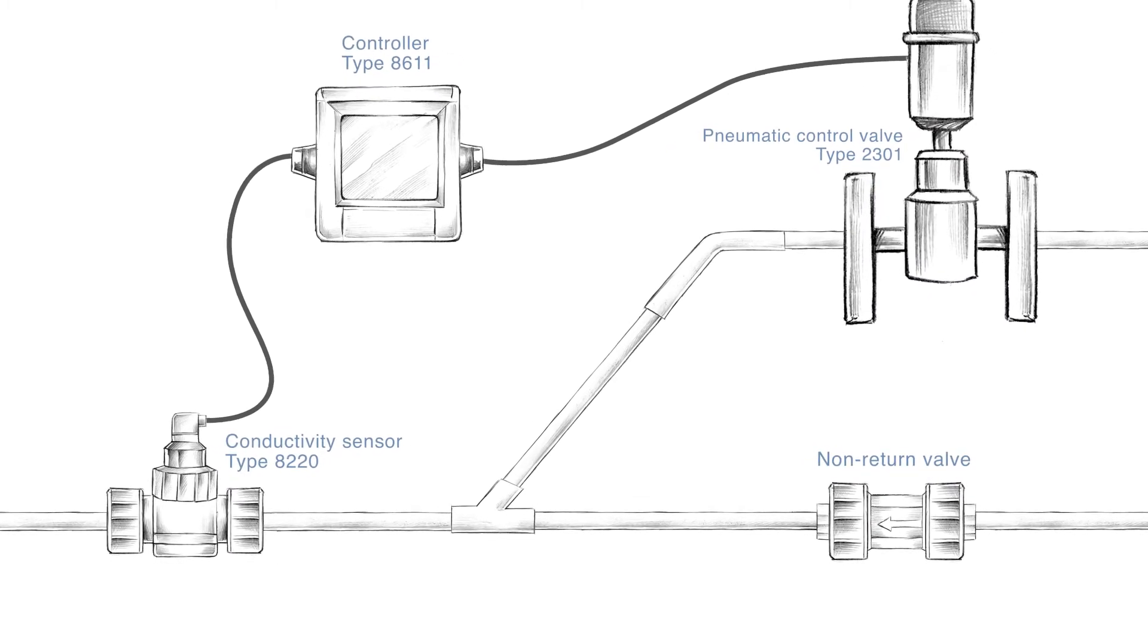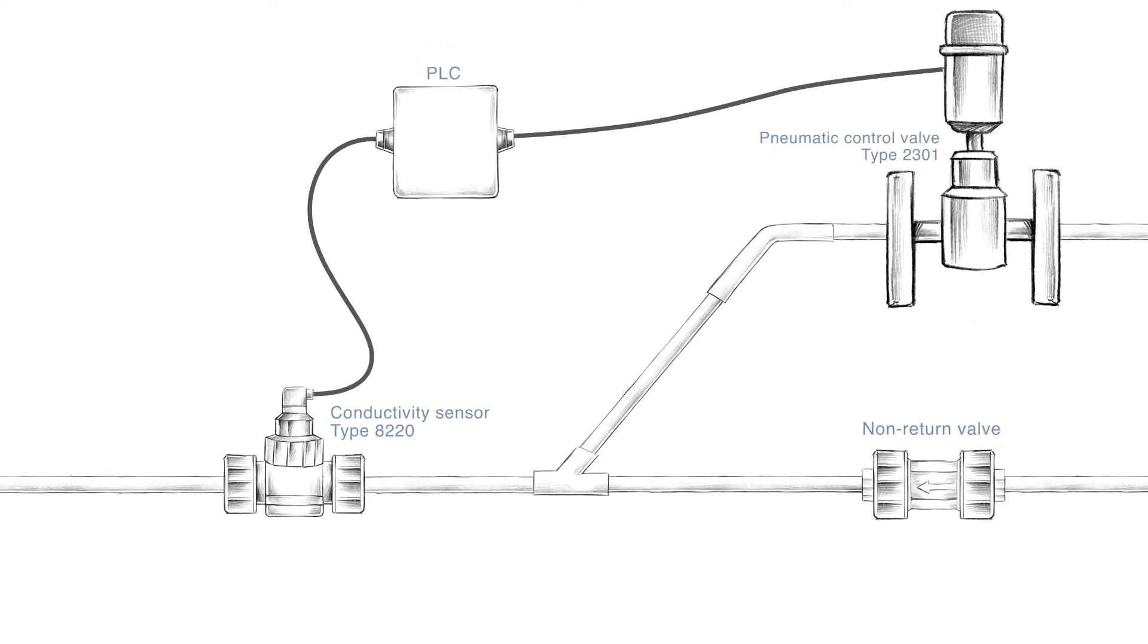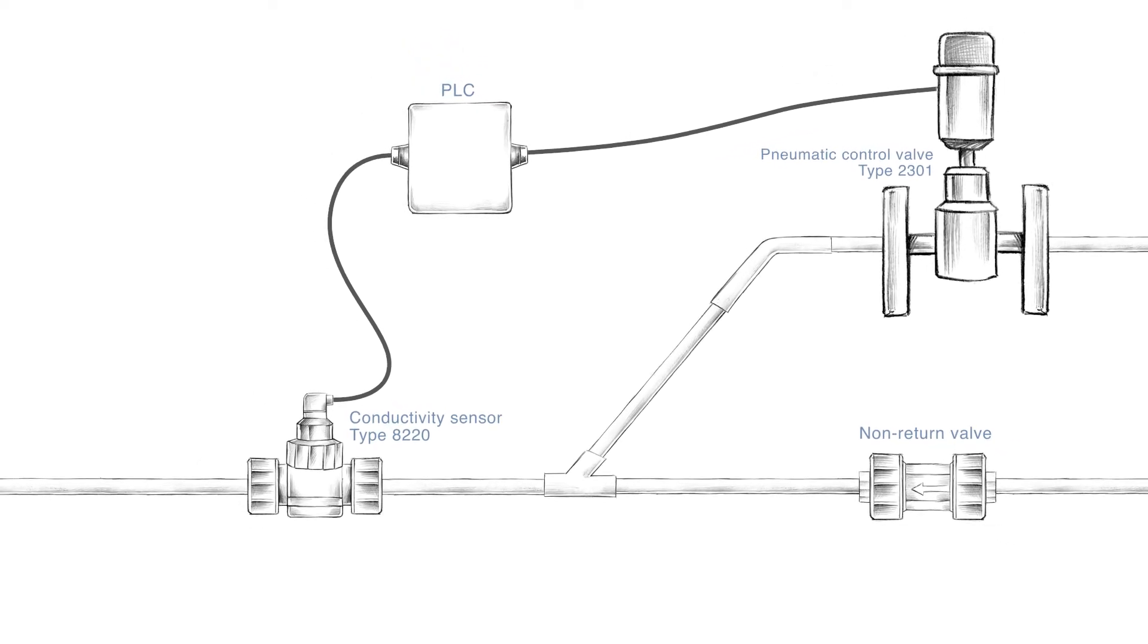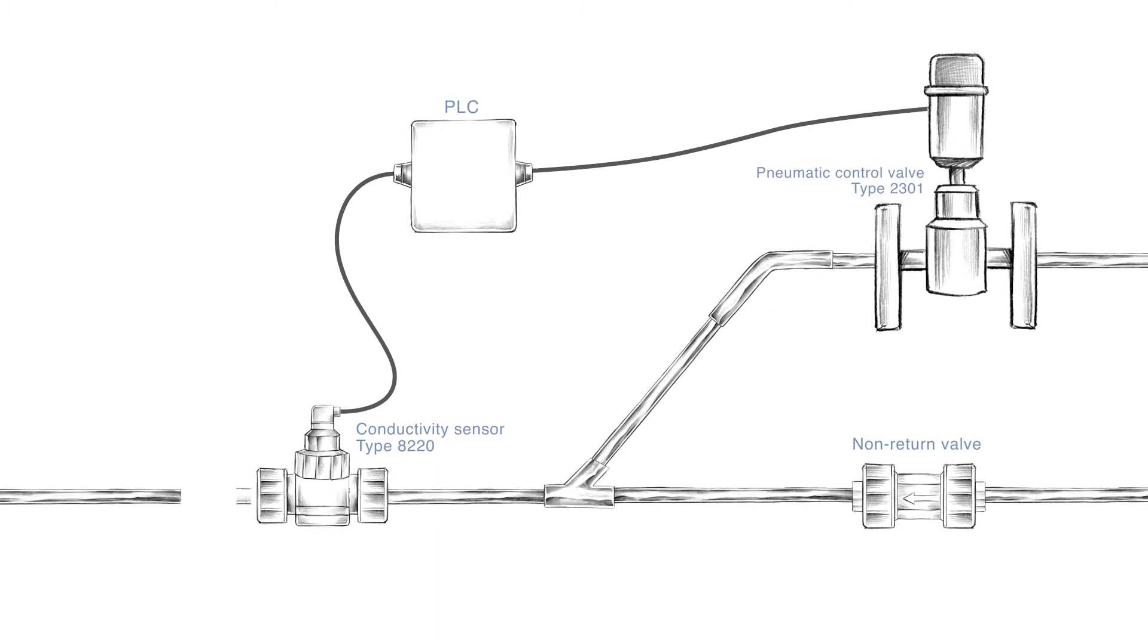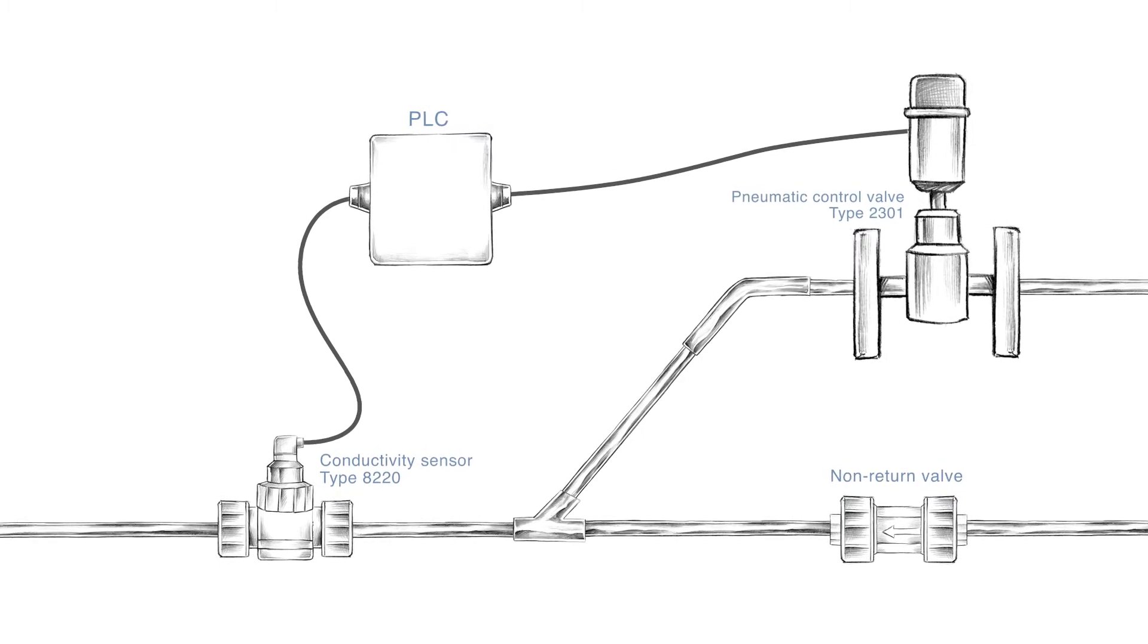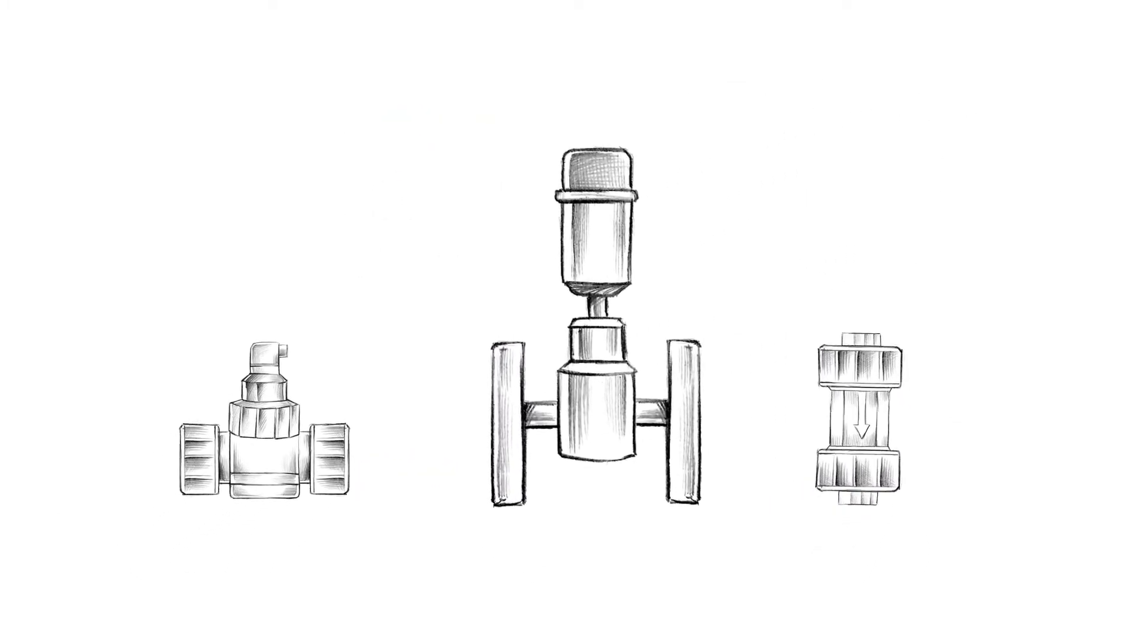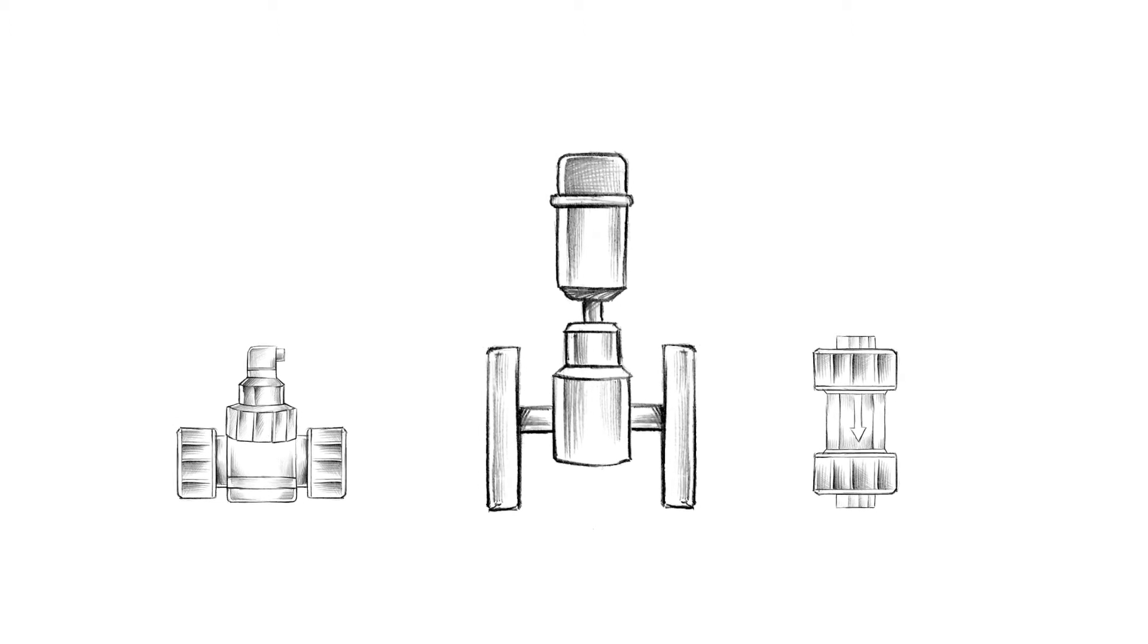Process control takes place via a pre-configured Burkhardt controller or alternatively via your PLC. When it comes to piping, you can choose between stainless steel or plastic. Moreover, different process connector types are possible, such as flange or thread. The entire blending unit can be obtained as a pre-assembled system or as a product package featuring matching individual components.